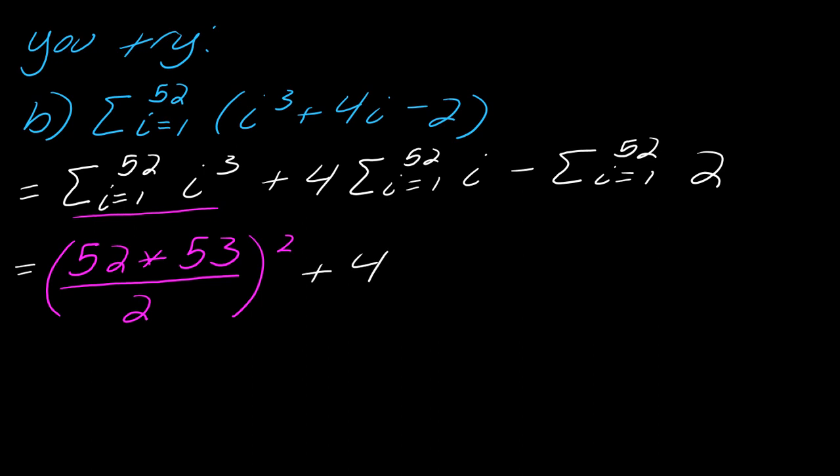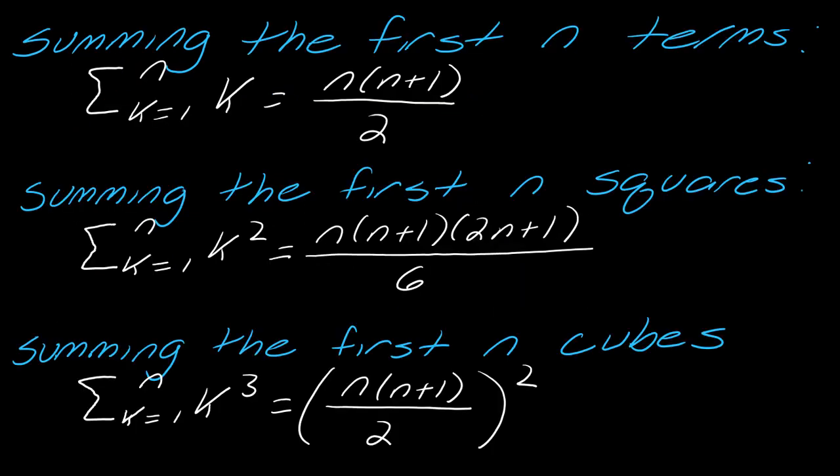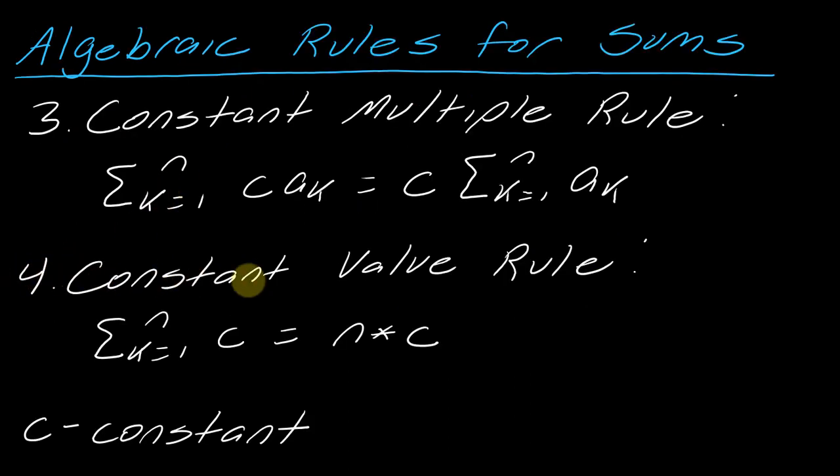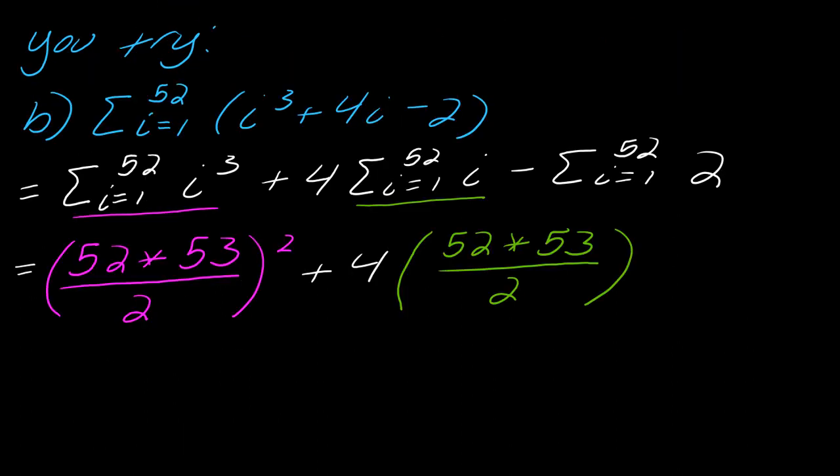Now we're going to have plus 4 times and now I'm going to go ahead and use a formula for this one. So this will come out to, I'll go ahead and maybe write some parentheses here, this will be 52 times 53 divided by 2. So that would be just this part of the sum here and that's using this formula here using the first n terms. And then this last one I can use the constant value rule. So that's this one right here, I'll just take n times that constant so in this case that would be 52 times the constant. So this last part will be minus 52 times 2.